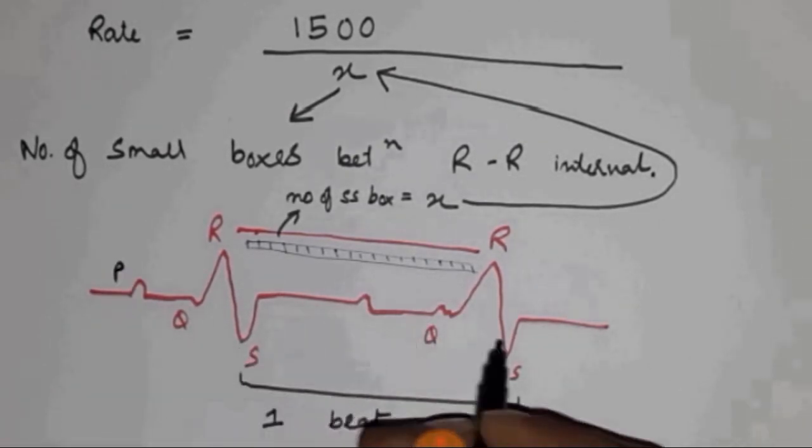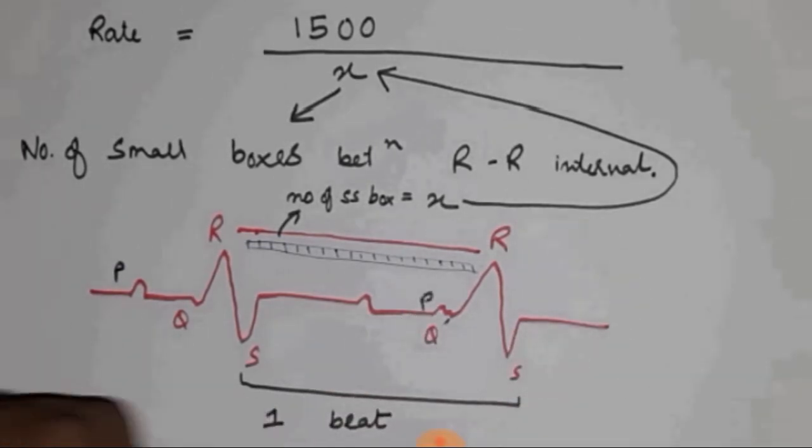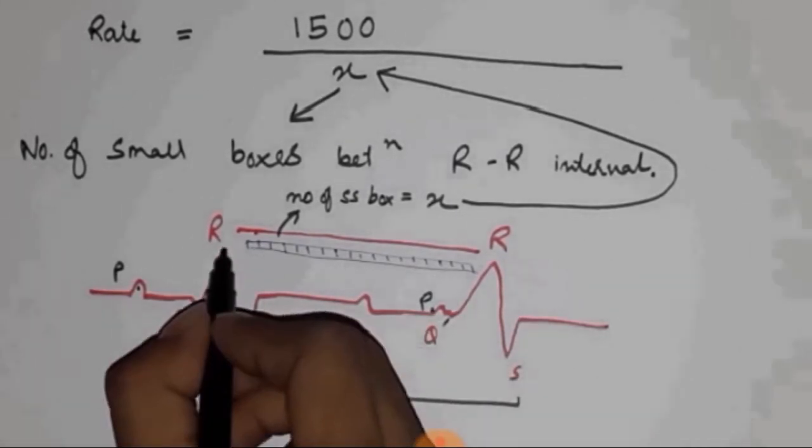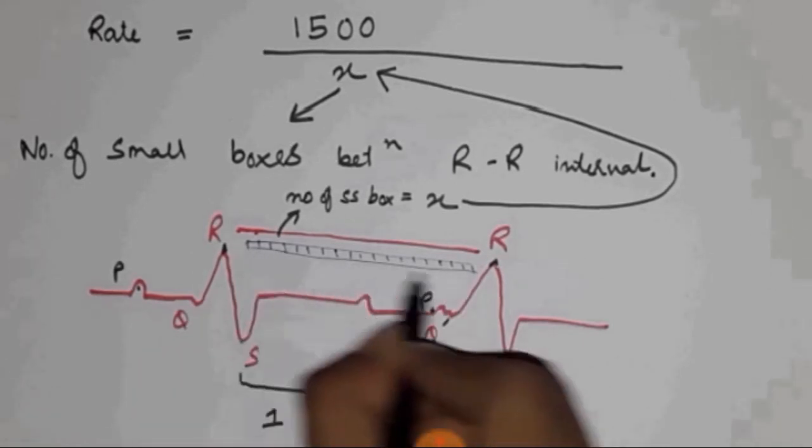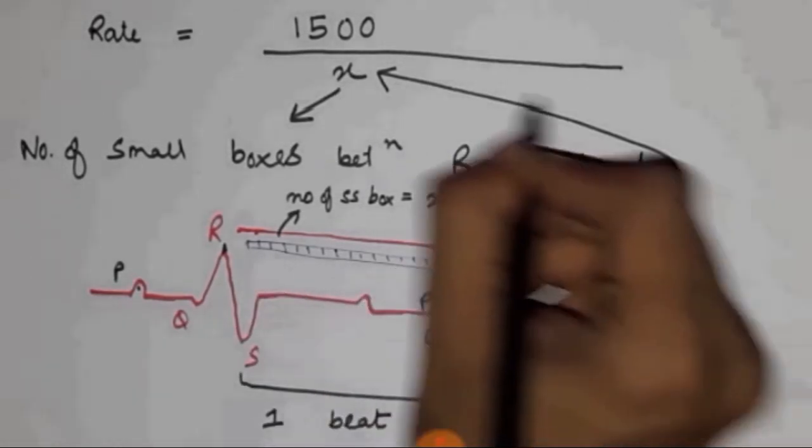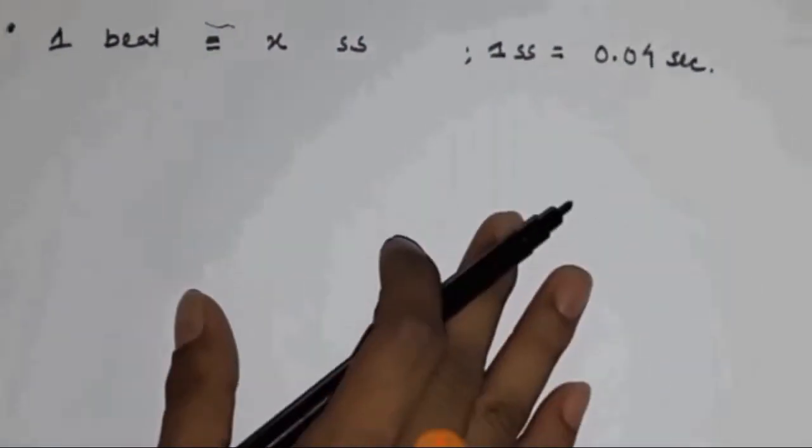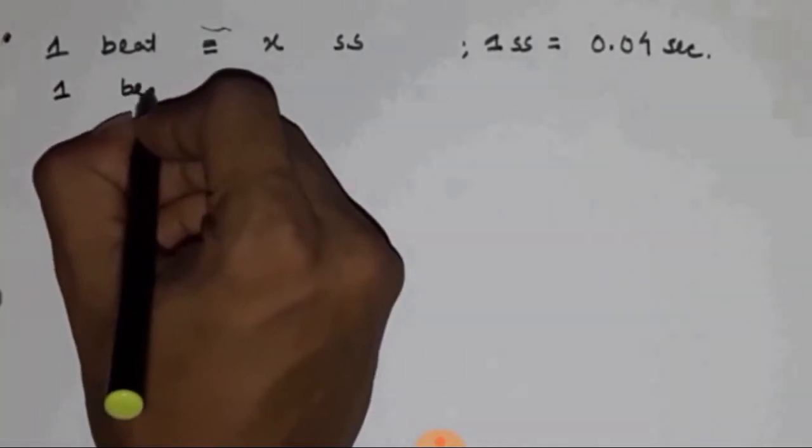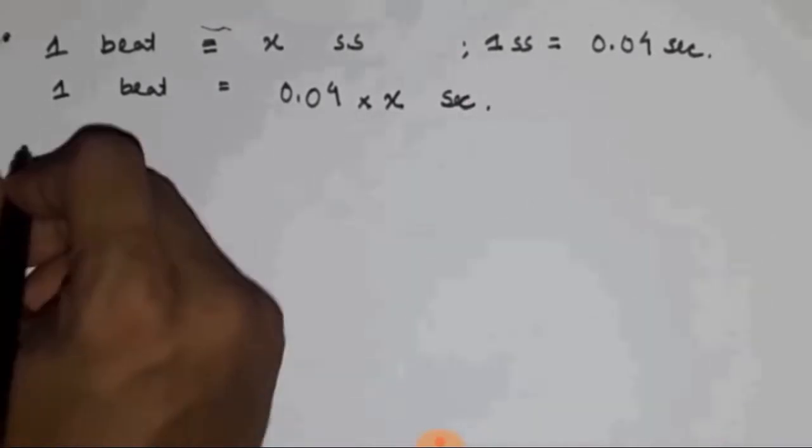You might ask, why don't we take the PP interval if we get the R-R, because it's not convenient. PP interval is not very convenient. However, it is convenient that it has the pointed edges, where we can simply calculate the number of small boxes, putting that into formula. Now, we know that one beat corresponds to X number of small squares, and one small square takes about 0.04 seconds. Therefore, one beat will be 0.04 times of X small squares.